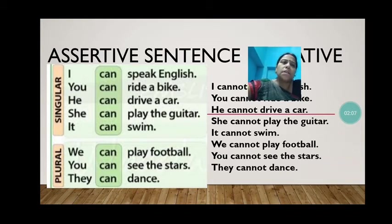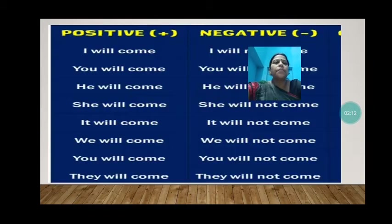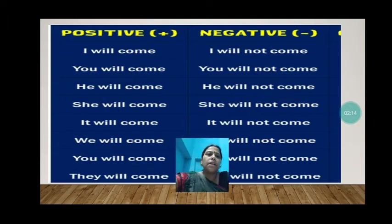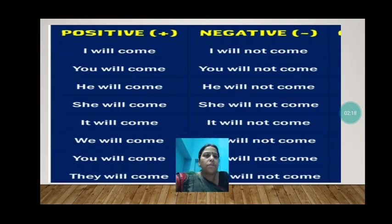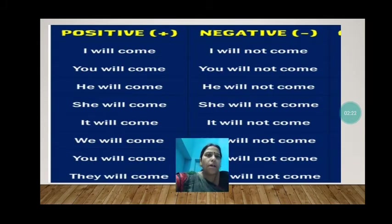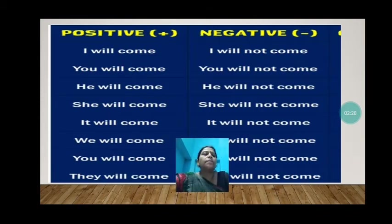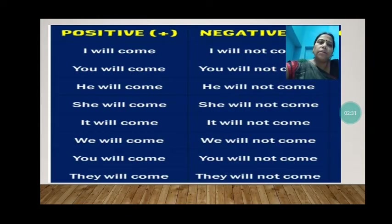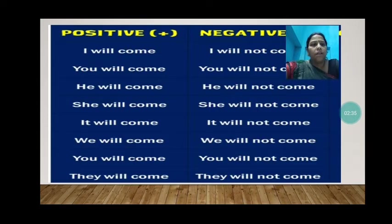Now let us see with 'will', whether there is any change. 'I will come' — it's a positive sentence — becomes 'I will not come.' 'You will come' becomes 'You will not come.' 'He will come' becomes 'He will not come.' 'She will come' becomes 'She will not come.' 'It will come' becomes 'It will not come.' 'We will come' becomes 'We will not come.' 'You will come' becomes 'You will not come.' 'They will come' becomes 'They will not come.'